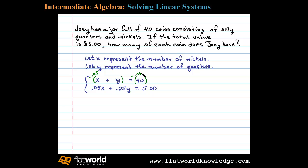Doing this, we'll be able to eliminate the variable X. That'll leave us with an equivalent system: negative 0.05X minus 0.05Y equals negative 0.05 times 40, which is negative 2. Now adding these two equations together...